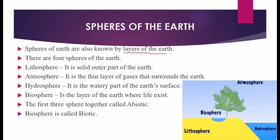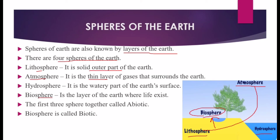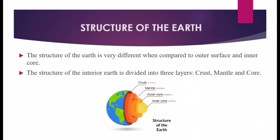The spheres of the Earth are also known as the layers of the Earth. There are four spheres: the lithosphere, which is the solid outer part; the atmosphere, which is the thin layer of gases surrounding the Earth; the hydrosphere, which is the watery part of the Earth's surface; and the biosphere, which is the layer where life exists. The first three spheres together make life possible — this is the biosphere.